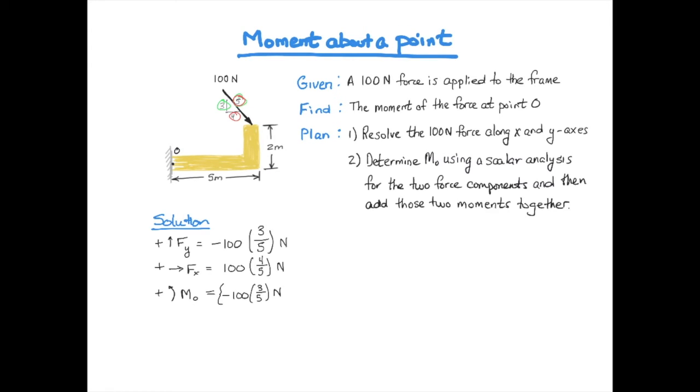So we have minus 100 times three-fifths, which is the force, and it's acting at a distance of five meters. So we multiply the y component times the distance away from the origin, which is five meters in the x direction.